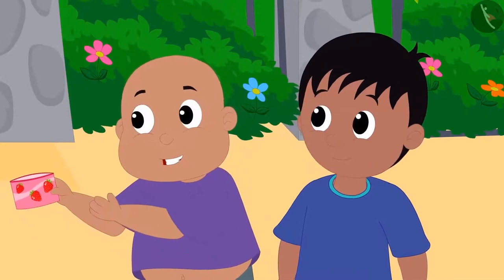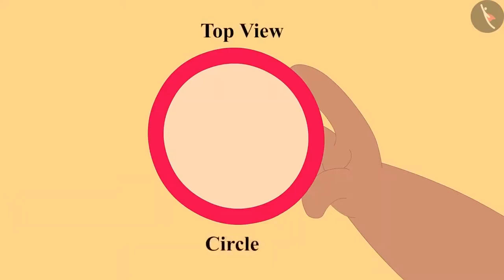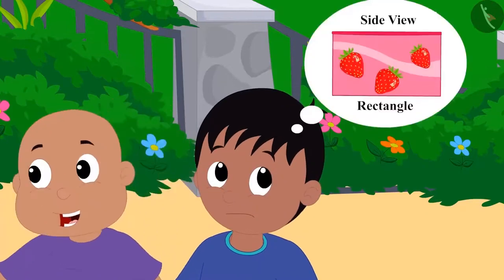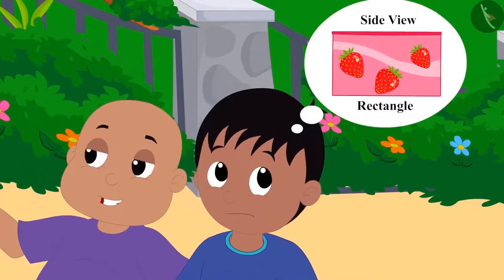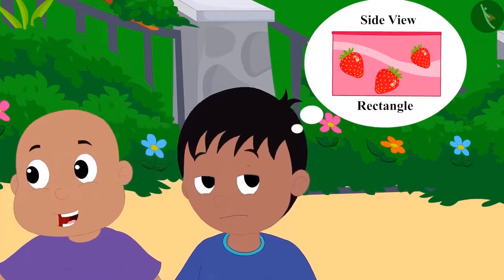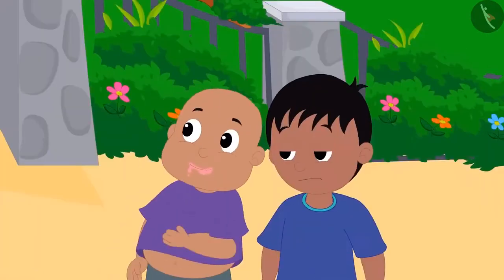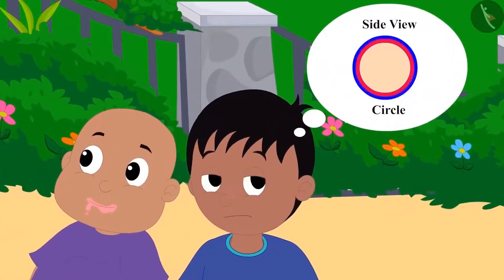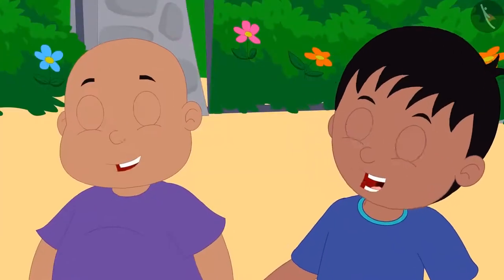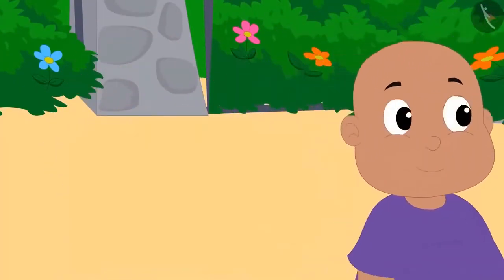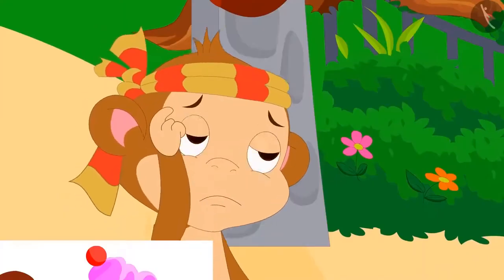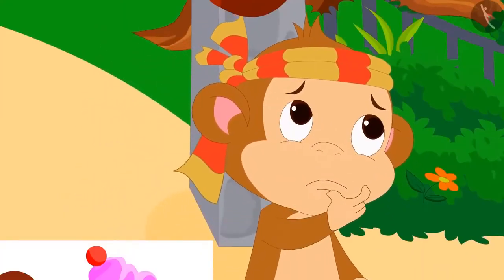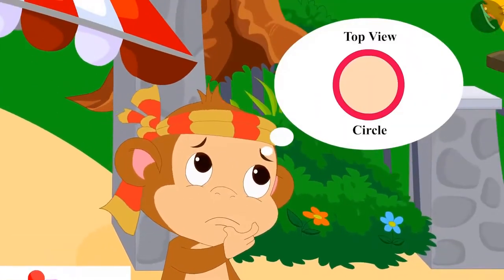Bablu showed him the cup from above — that is top view — and said, wrong answer. This is a circle. Raju saw the cup from one side and to him it looked like a rectangle. Bablu ate the ice cream and Raju began to think about how Bablu made a fool of Babban. Bablu and Raju laughed and started walking home.